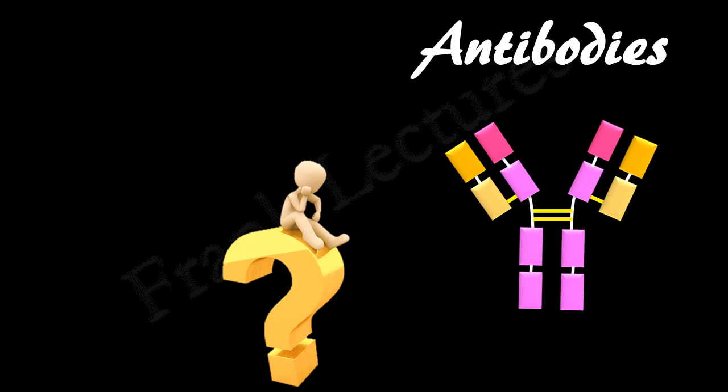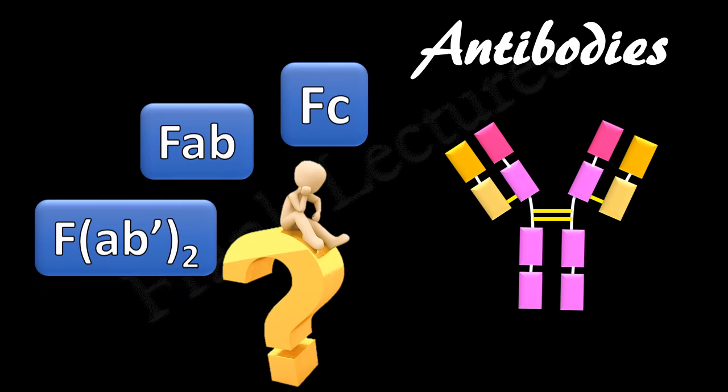In the last video lecture we covered the basic structure of the antibody molecule. You must have come across the terms FAB and FC in immunology. What are these? To understand these terms we need to look at key experiments which revealed the antibody structure.